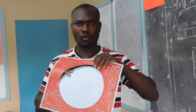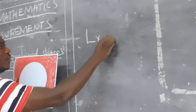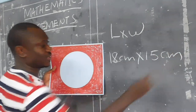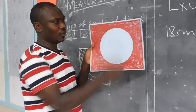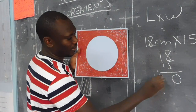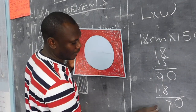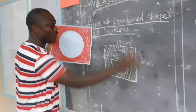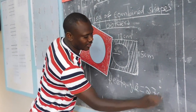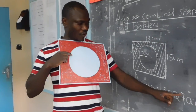So let's start with the area of everything — that is length by width, which means 18 centimeters by 15 centimeters. That gives me the area of the whole rectangle. 18 multiplied by 15 gives us 270 square centimeters. But remember, the area of the circle is also within this area, so I also need to get the area of the circle.